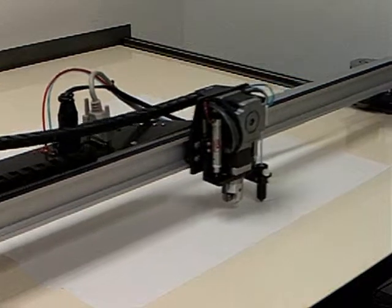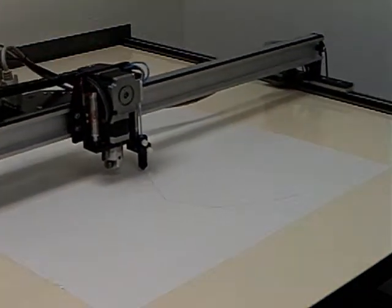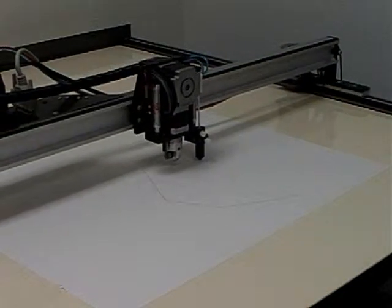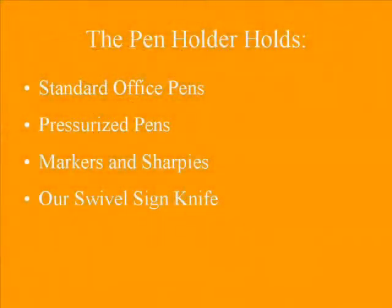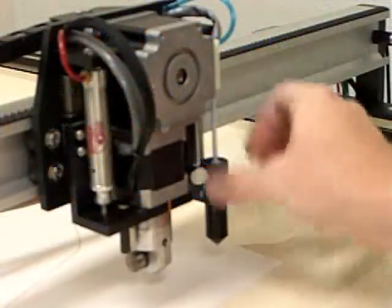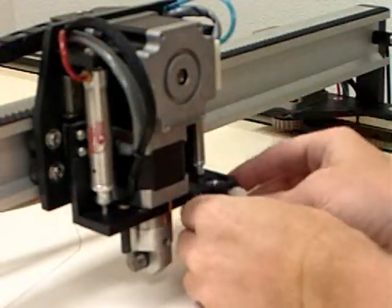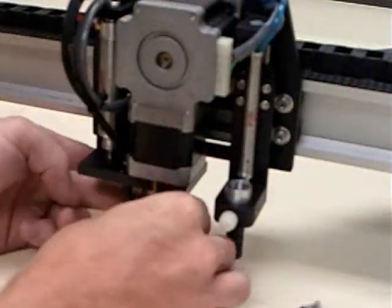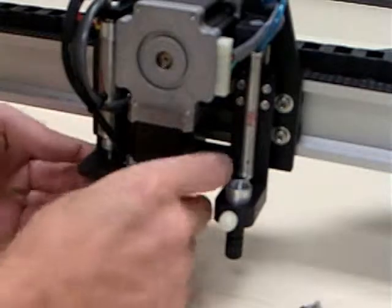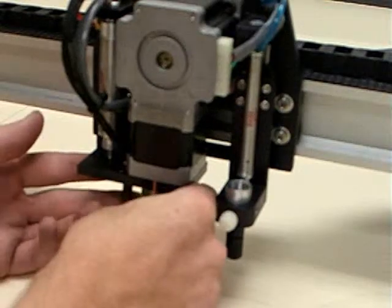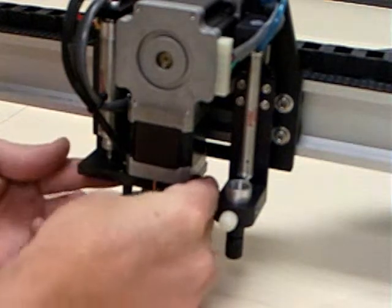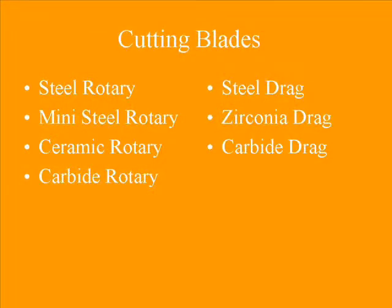The multi-tool plotting cutting head holds a variety of tools. Here, it is plotting using a standard office pin in the pin holder. Watch as it quickly plots the pattern we just digitized. The pin holder can also drive markers, pressurized pins, and our swivel sign knife. The swivel sign knife is excellent for sign vinyl, where you need to be able to adjust the depth of your cut. We are now quickly switching from a pin to the swivel sign knife without the use of any tooling. Our steered cutter can also easily swap knife blades, as the cutting head features magnetic mount blade holders that allow you to instantaneously swap between our different cutting blades without the use of tooling. We have over half a dozen different types of blades to ensure that we can meet your cutting needs.